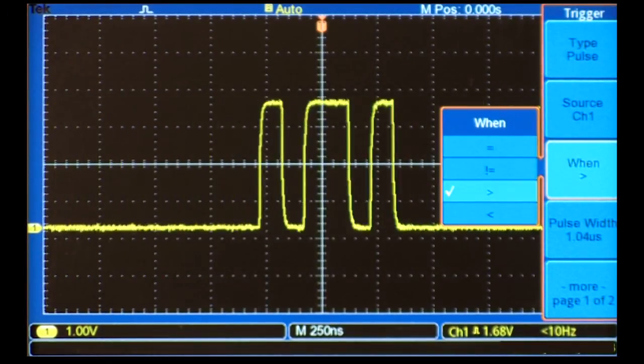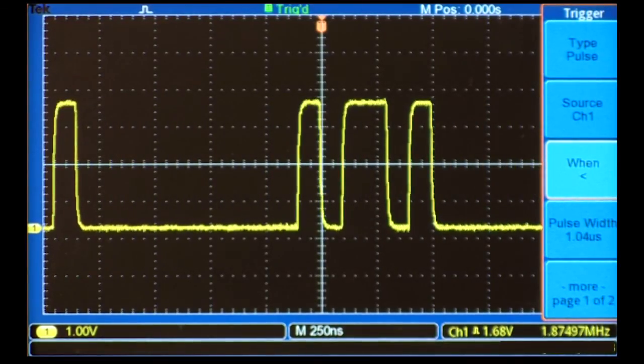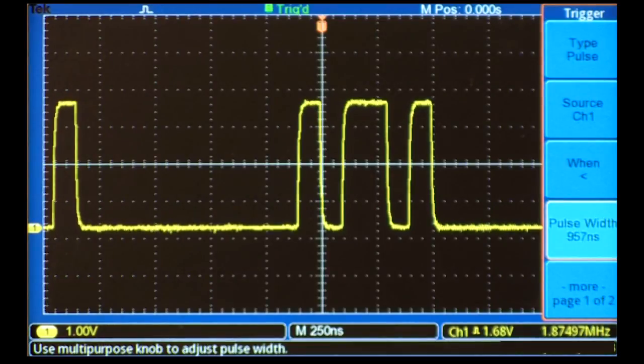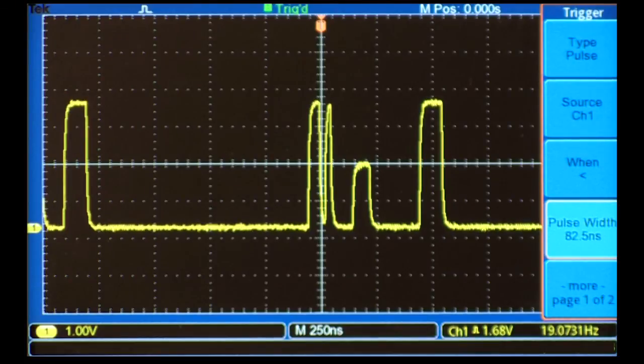We can set the scope to capture any positive pulse that's less than around 80 nanoseconds long. The scope captures a pulse with a glitch on the leading edge. Thanks to pulse width triggering, we can get a good look at the event.